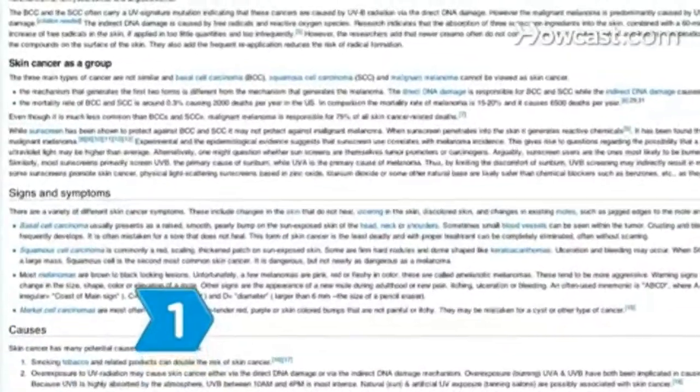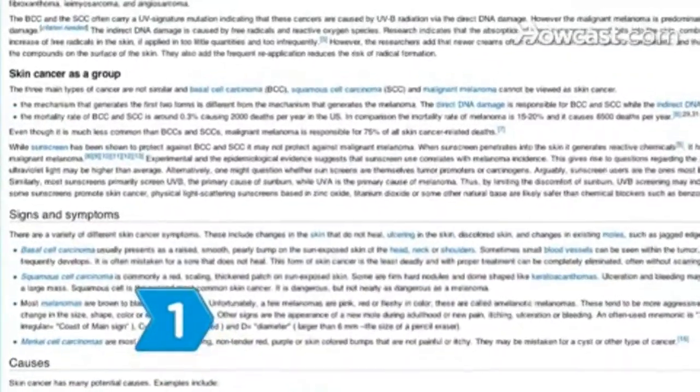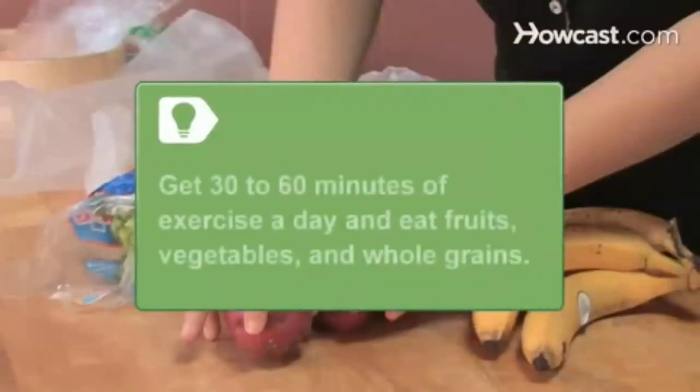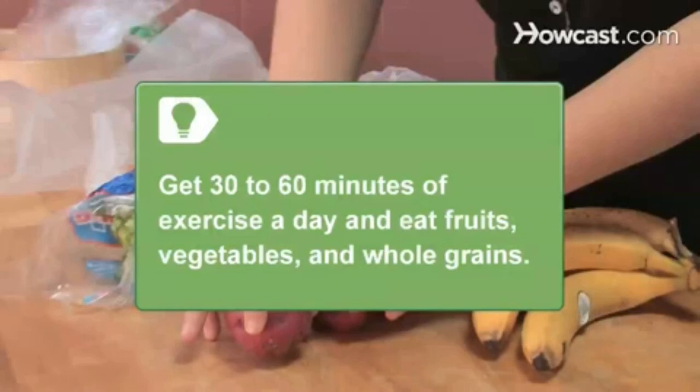Step 1. Do all you can to prevent cancer by living a healthy lifestyle that includes regular exercise, a healthy diet, and by maintaining a healthy weight. Aim for 30 to 60 minutes of exercise per day and maintain a diet filled with fruits, vegetables, and whole grains.